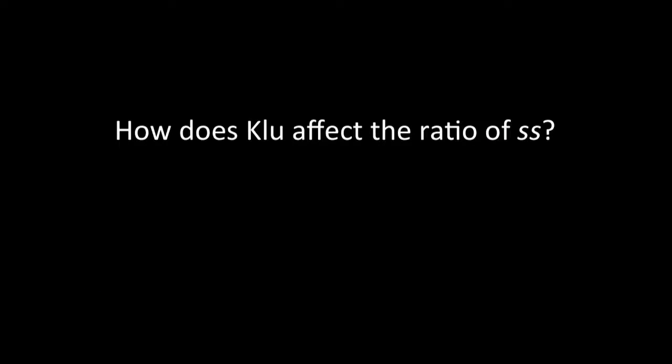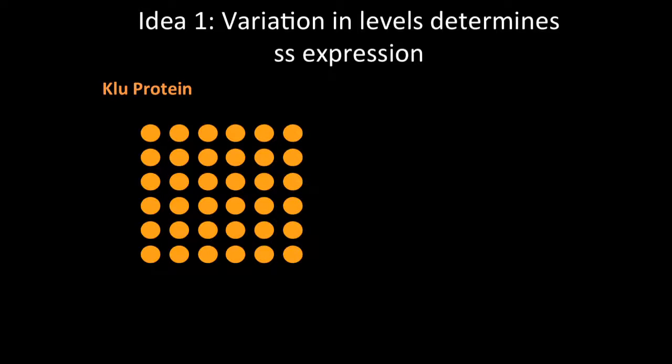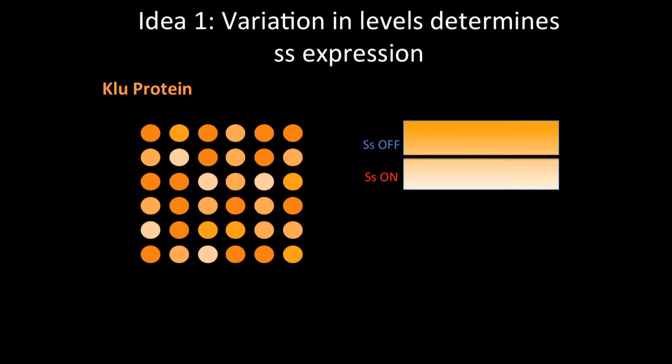So how does clue actually affect the ratio of spineless? We have two ideas about this, and one is that perhaps the variation in clue levels determine spineless expression. We often think of identical cells as having identical amounts of protein, but we know that there are intrinsic differences. It's possible that there's a threshold for clue protein, and if clue is above this threshold, we get spineless off, and if it's below, we get spineless on, leading to the mosaic that we see.